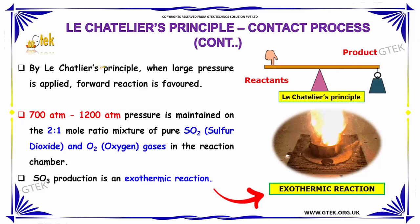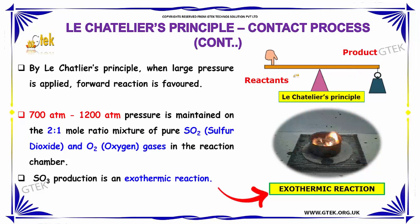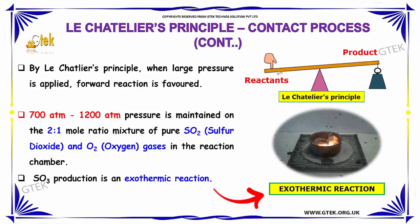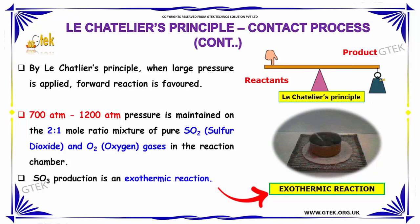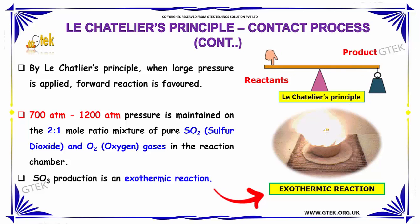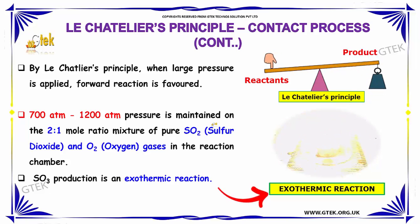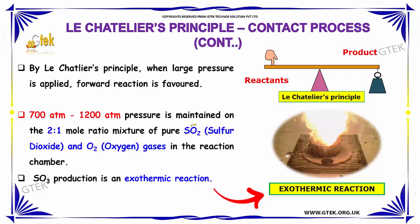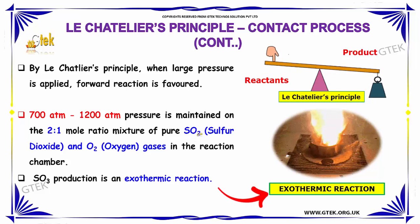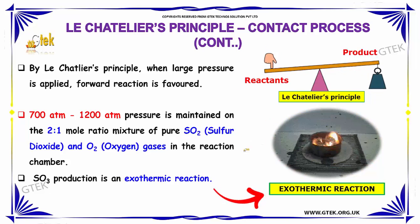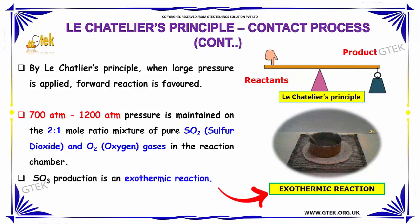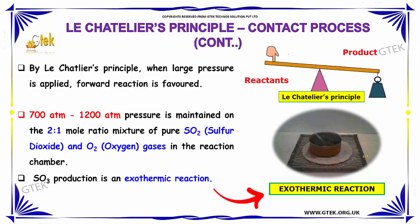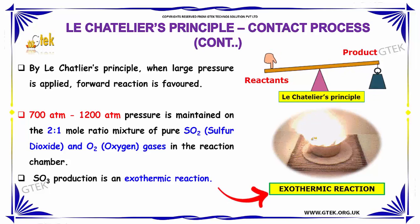By Le Chatelier's principle, when large pressure is applied, the forward reaction is favored. A pressure of 700 to 1200 atmospheres is maintained with a 2:1 ratio of sulfur dioxide and oxygen in the reaction chamber. Sulfur trioxide production is an exothermic reaction.